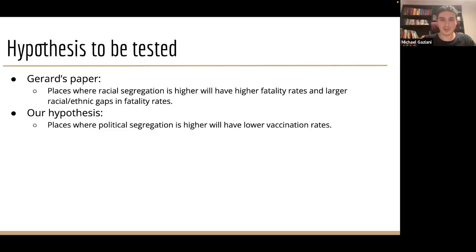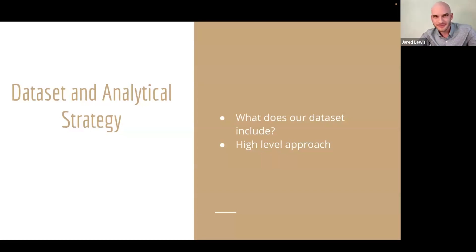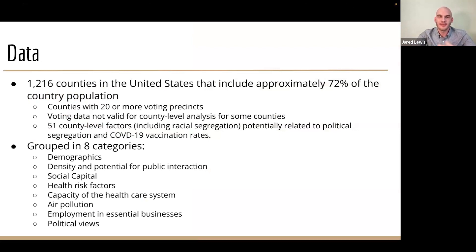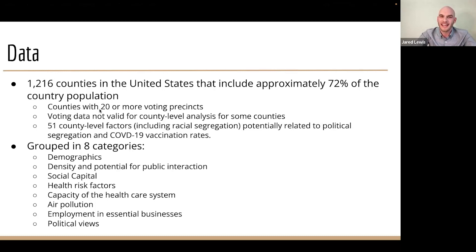I'll pass it along to Jared now to discuss the data and our analytical strategy. The data that we had included 1,216 counties in the United States, which makes up approximately 72% of the country's population. You might notice this is fewer counties than cited for Gerard's research. That is because in order to calculate political segregation, we wanted counties that had 20 or more voting precincts, since we used precinct-level voting data to calculate our political segregation index.